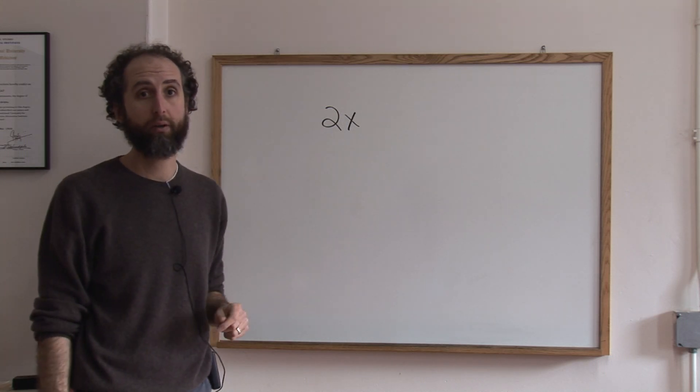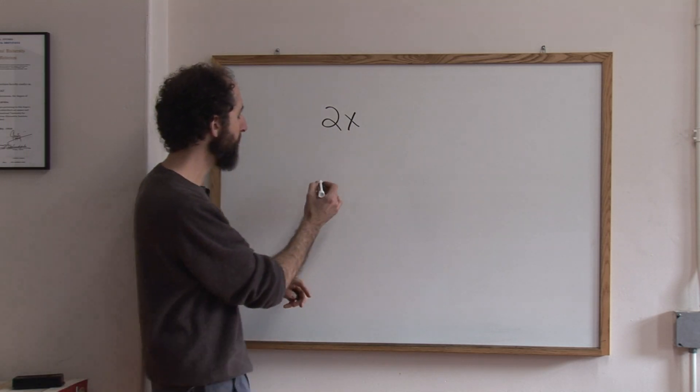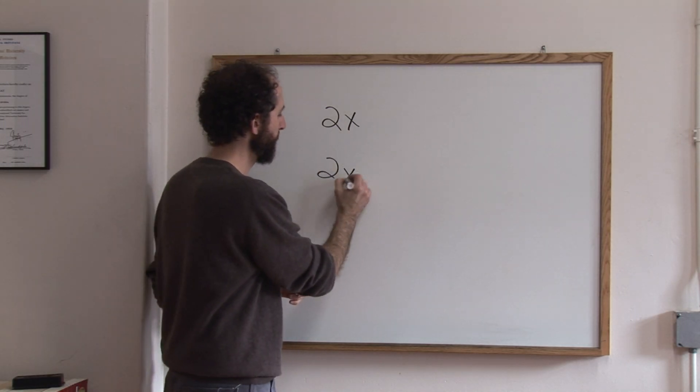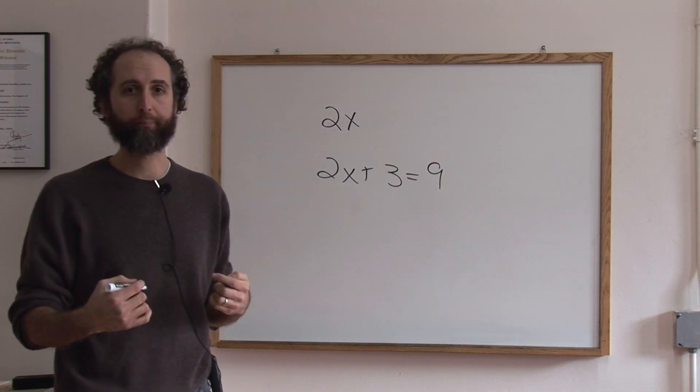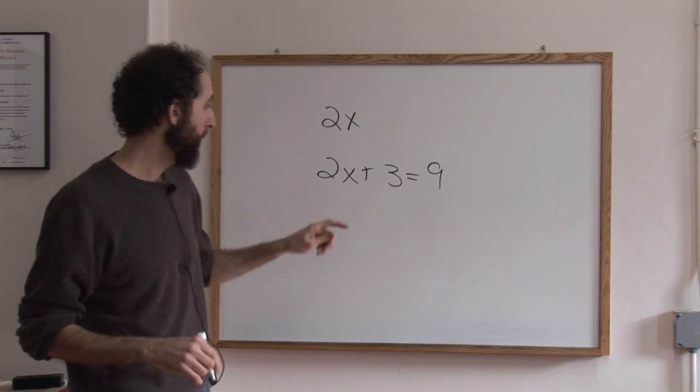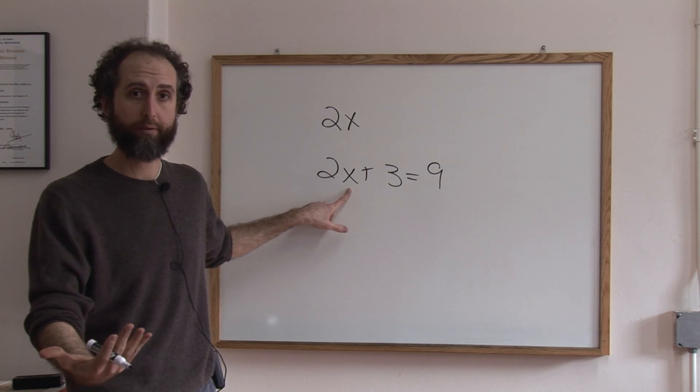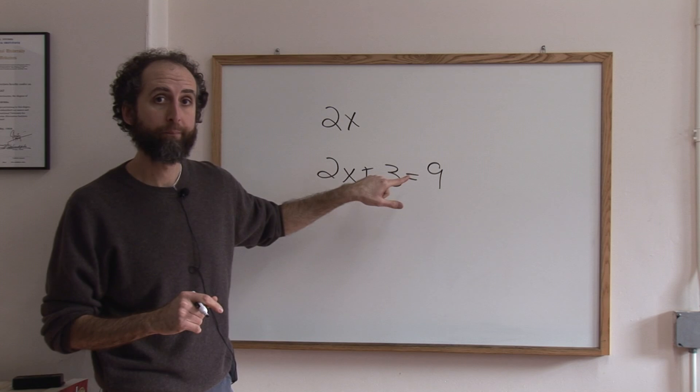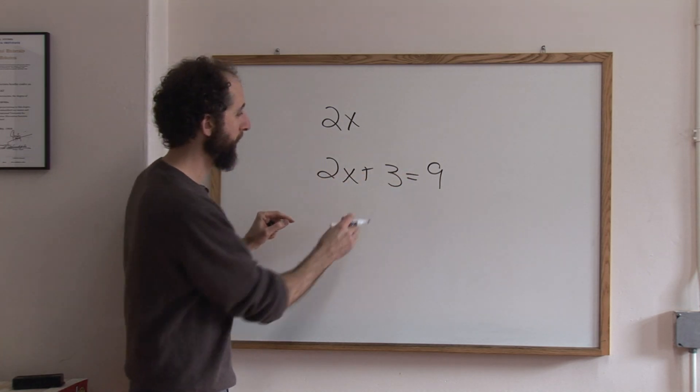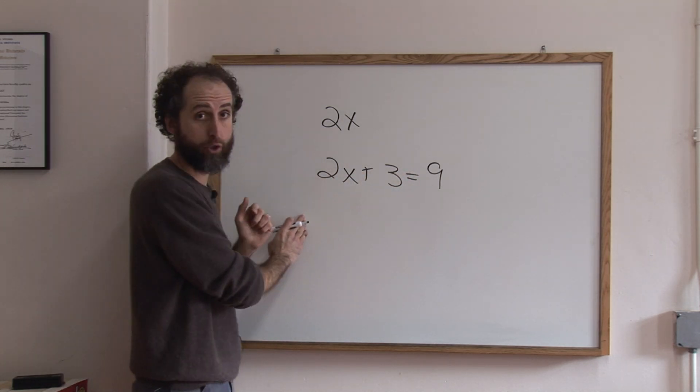So that's the first thing - don't be intimidated. Second thing: if you have an algebraic expression and you want to solve it, to solve it means get the variable alone. Isolate the variable. The way we're going to do that is by eliminating everything near the variable. So in this case, we're going to take the three away and then take the two away.